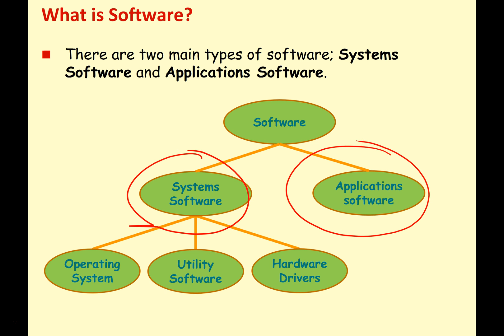System software is usually divided into three categories: the operating system, utility software, and what we often call hardware drivers. Sometimes we just refer to everything in system software as the operating system, but at this level we need to be able to separate that into the operating system, the utility software, and the hardware drivers — which are all linked, but can be considered different types of software.